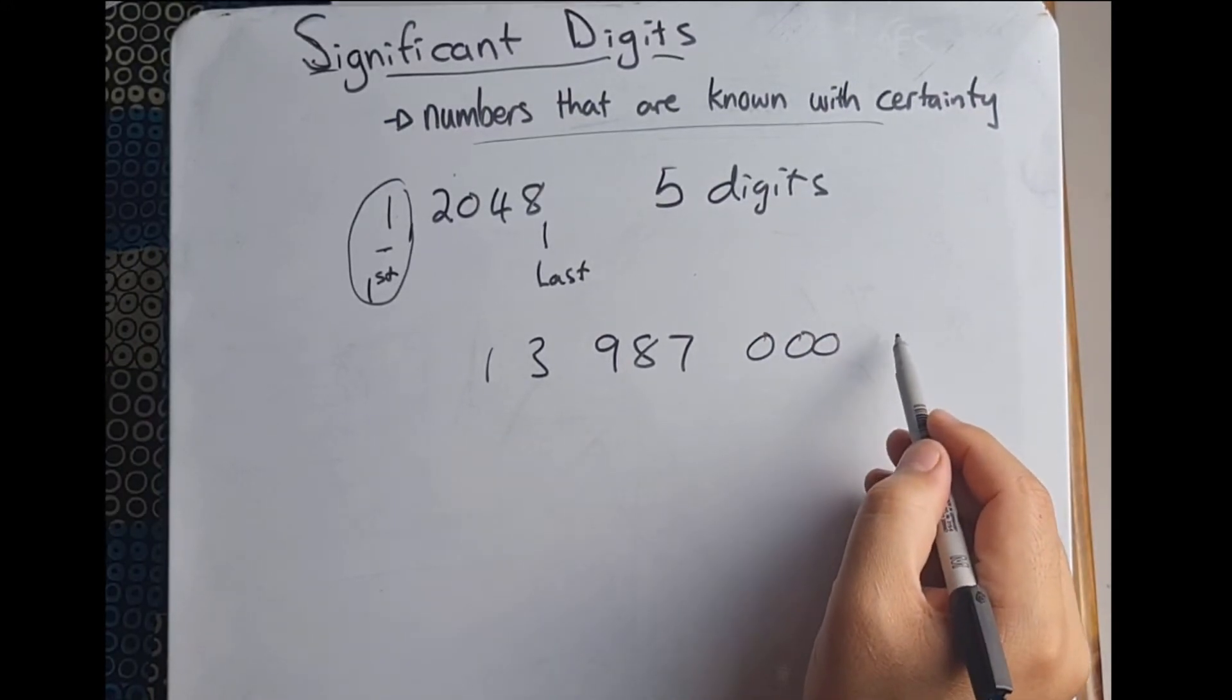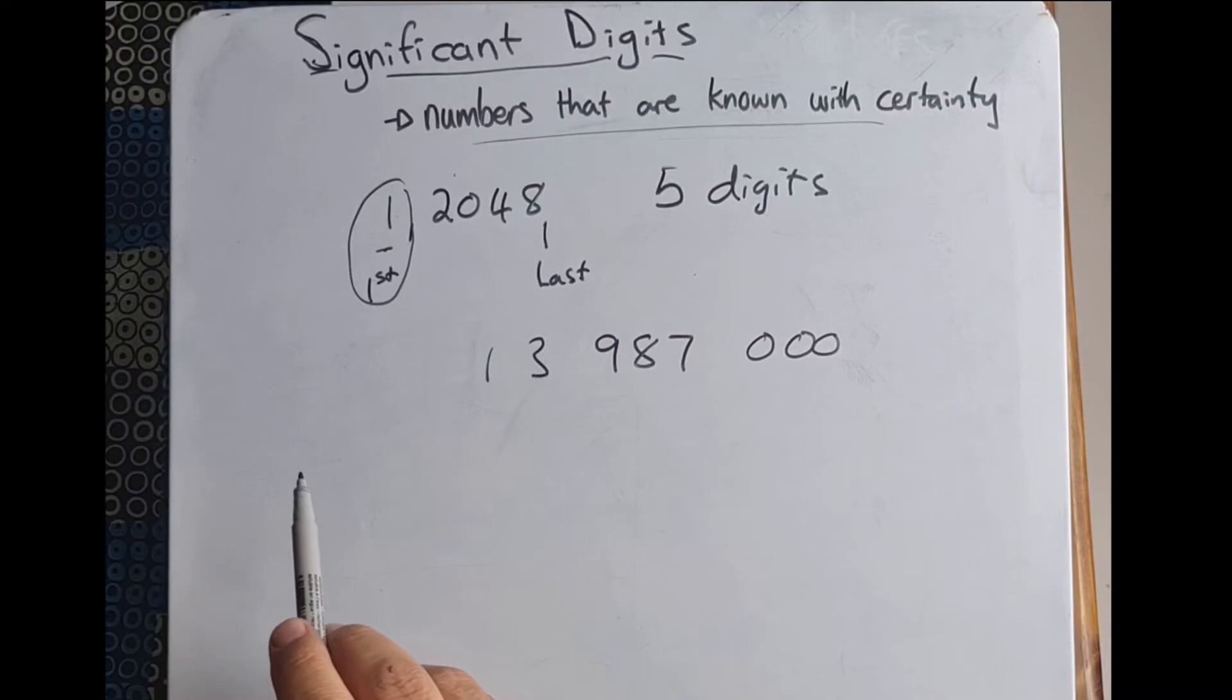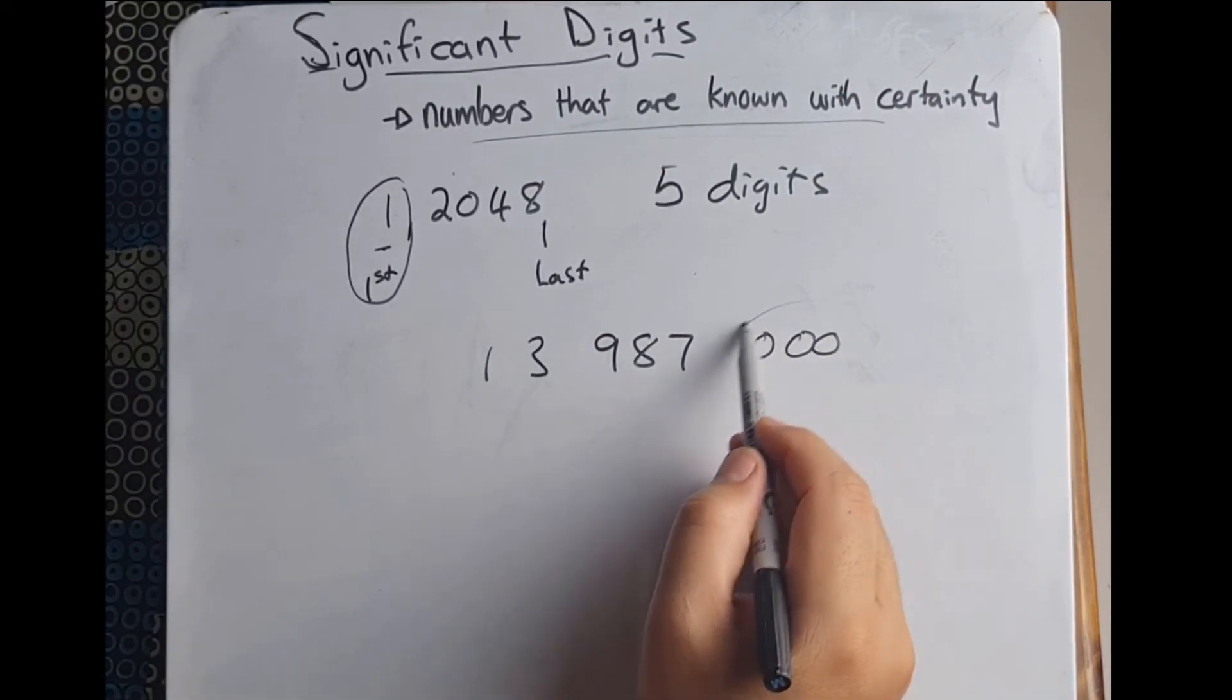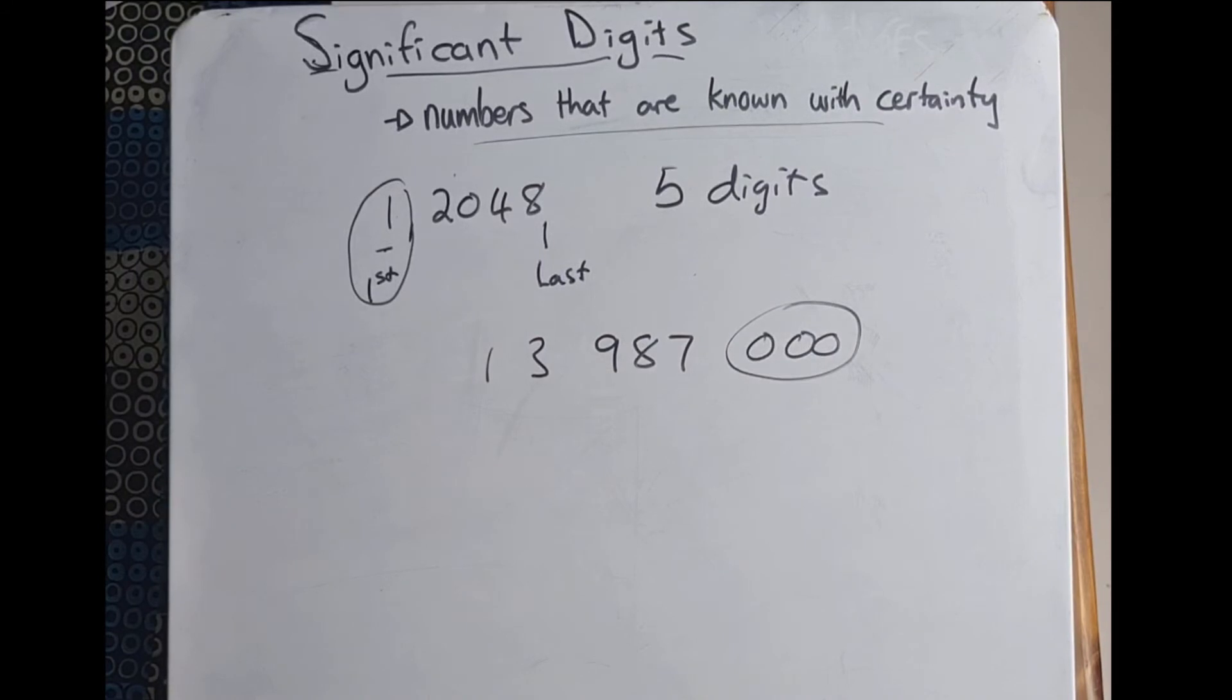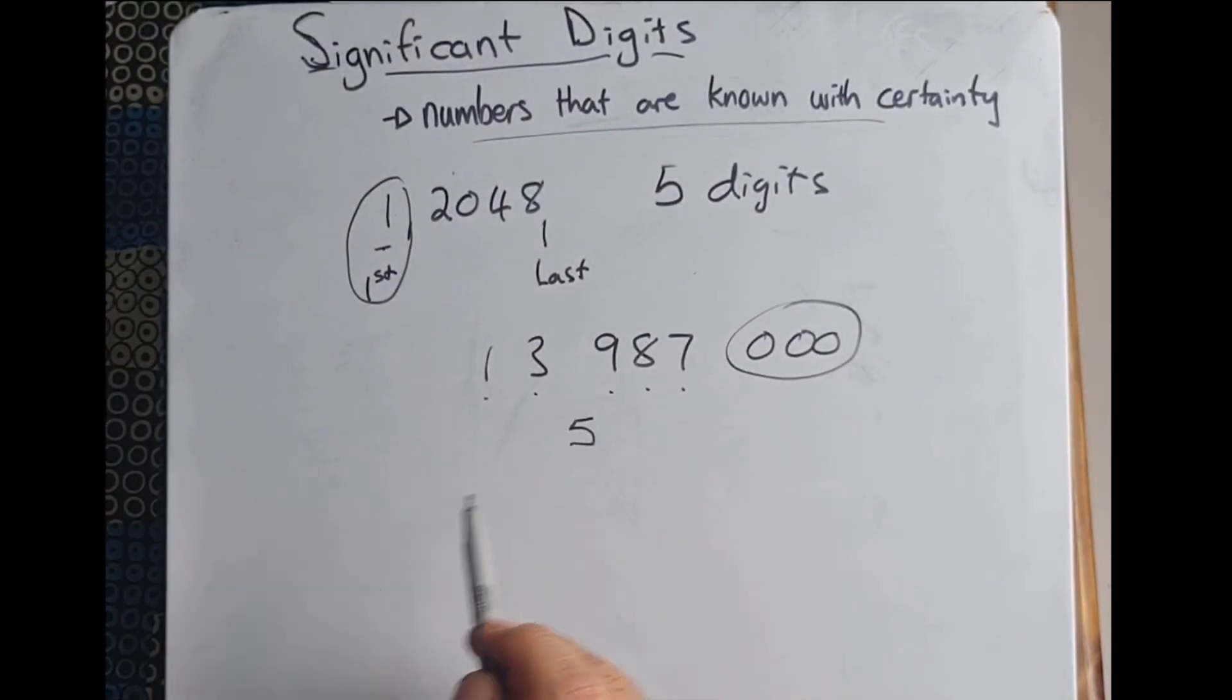That would be 13 million nine hundred and eighty seven thousand. The zeros at the end of the number are not considered significant. So this number has how many significant digits? One, two, three, four, five.